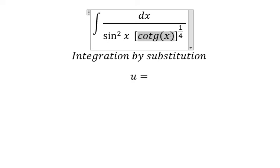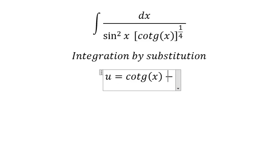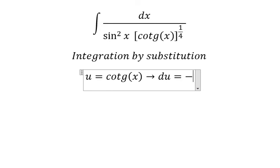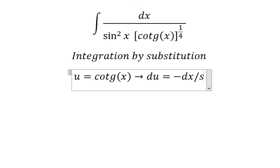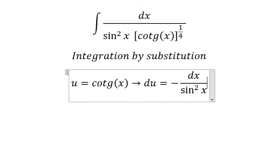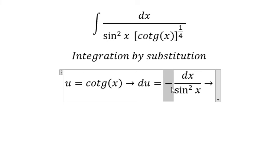cotangent x. Then we take the derivative of both sides and we have du equals negative dx over sine squared x. Since we don't have the negative sign here, I need to move the negative to the left.